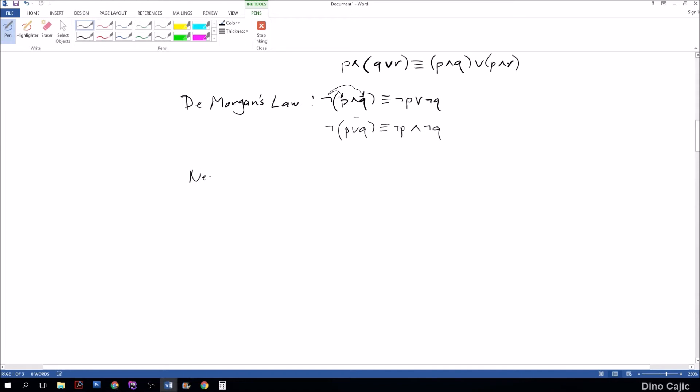One more rule for this tutorial. The negation law states that P or not P is identical to true. Because if P was true, then not P is false. So true or false is true. If P was false, not P is true. True or false, or false or true is true as well.